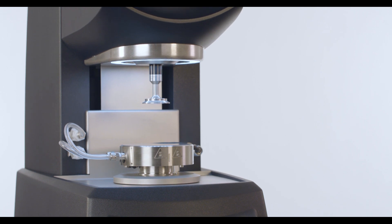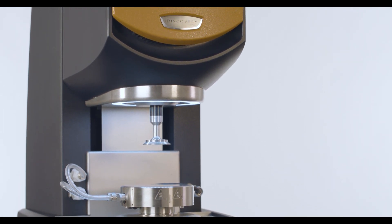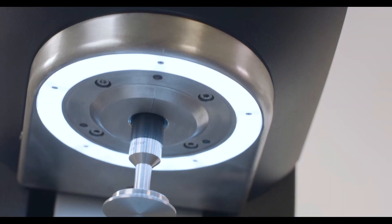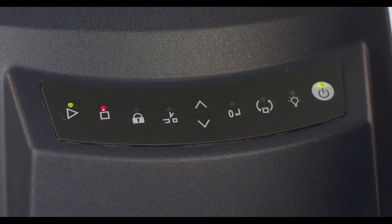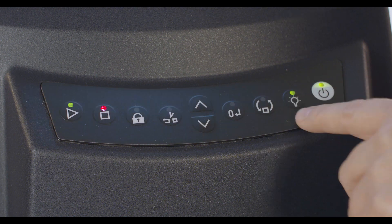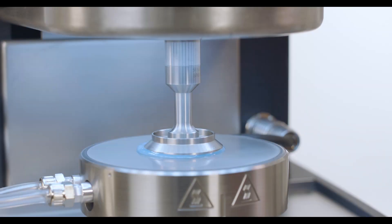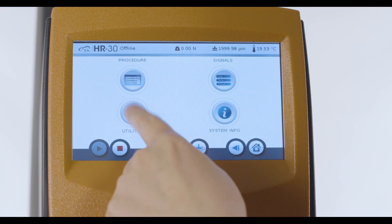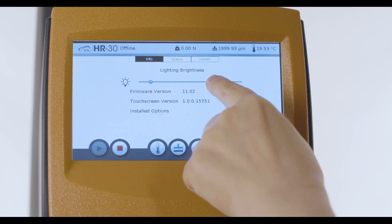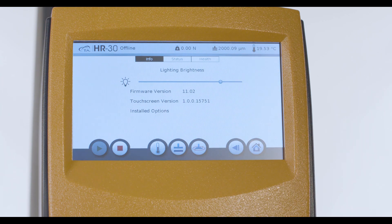The Discovery Hybrid Rheometer has a built-in LED light under the instrument head front panel that is used to assist with sample loading, trimming, and verification. From the instrument front panel, press this button to turn on the LED light. You can also adjust the lighting brightness to your comfort level from the touch screen under the utilities page.